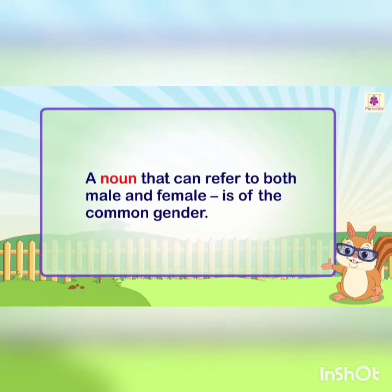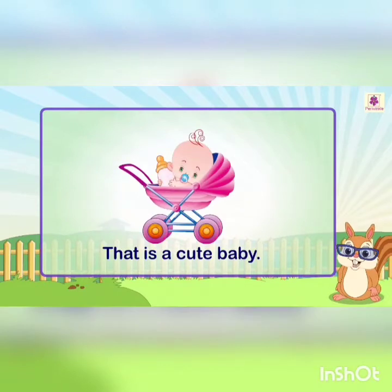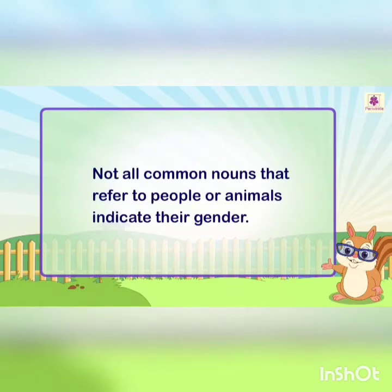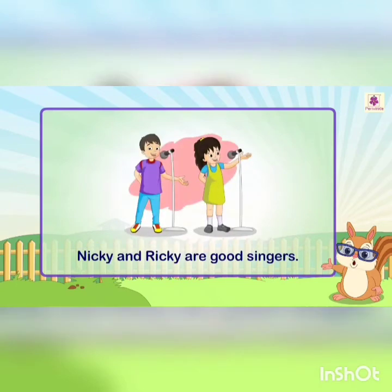A noun that can refer to both male and female is of the common gender. For example: 'That is a cute baby.' Here, baby is of the common gender. Not all common nouns that refer to people or animals indicate their gender. For example, Nicky and Ricky are good singers.